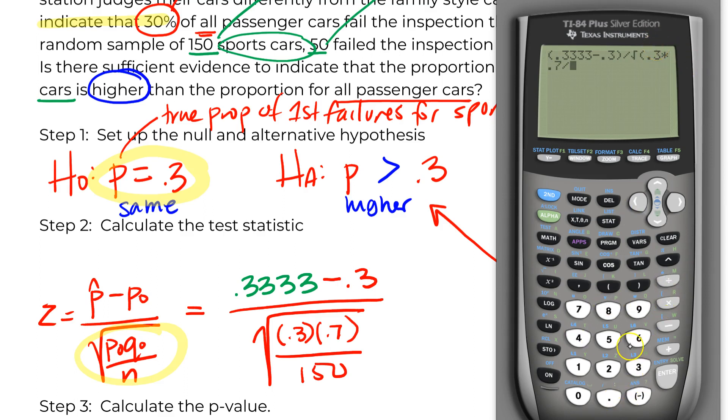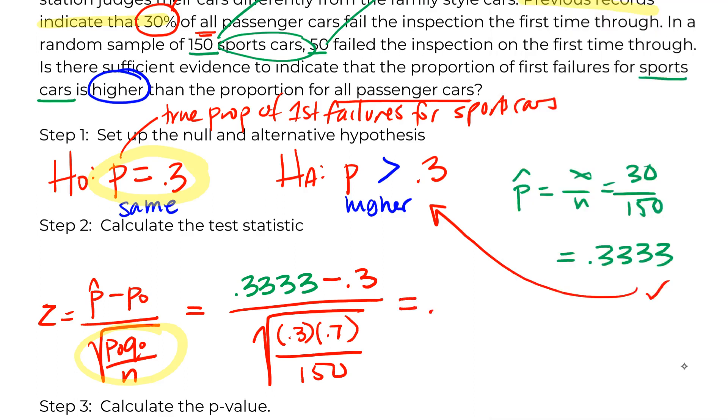So I know I have parentheses here, but you want to make sure I don't even use parentheses in my calculation. I just do 0.3 times 0.7 divided by 150. Looks like our value should be a z-score of 0.89. And I do tend to round my z-scores to two decimal places because if I'm using the table, if I'm someone with a small calculator, the best I can look up is two decimal places.